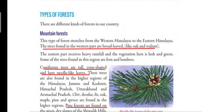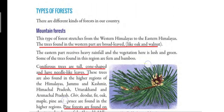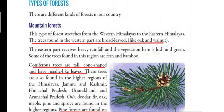Mountain forest stretches from the western Himalayas to the eastern Himalayas. The trees found in the western part are broad-leafed, like oak and walnut. The eastern part receives heavy rainfall and the vegetation here is lush and green. Some trees found in this region are fern and bamboo.